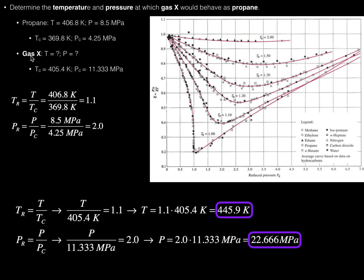If we want gas X to have a reduced temperature of 1.1, we set the reduced temperature equal to 1.1: that means 1.1 equals the temperature divided by the critical temperature of 405.4 Kelvin. Solving for temperature gives T = 1.1 × 405.4 Kelvin = 445.9 Kelvin. So at 445.9 Kelvin, gas X would have the same reduced temperature as propane. You can verify this: 445.9 Kelvin divided by 405.4 Kelvin gives 1.1 — the same reduced temperature as propane.